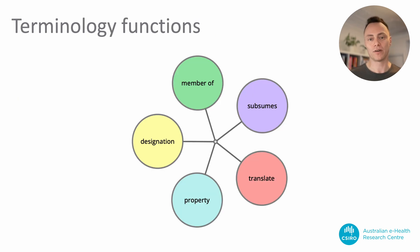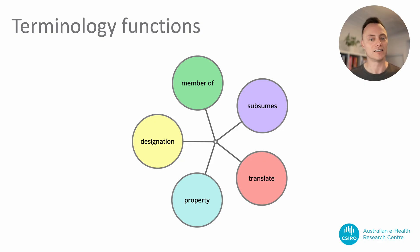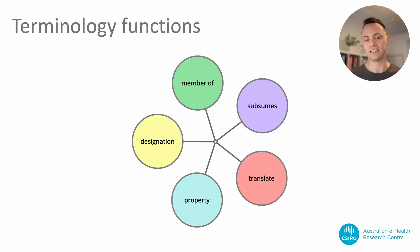Pathling has comprehensive support for querying FHIR terminology built in. This functionality automates the task of making calls out to a FHIR terminology server and joining the results back alongside your data. These functions allow you to query almost any aspect of the codes that are present within your data. This is particularly powerful when combined with terminologies such as SNOMED CT, which contain a rich set of properties and relationships.